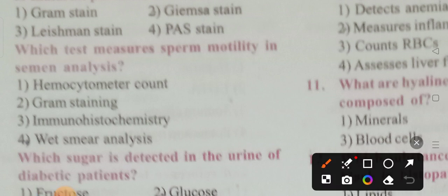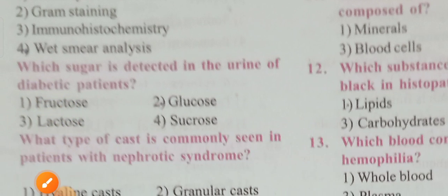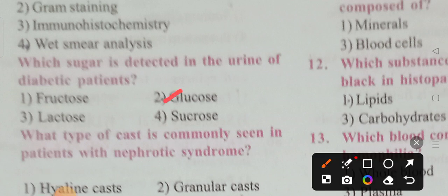Wet smear analysis — this test measures sperm motility in semen analysis. Next question: which sugar is detected in the urine of diabetic patients? Options are fructose, glucose, lactose, sucrose. Option 2 is the correct answer — glucose.